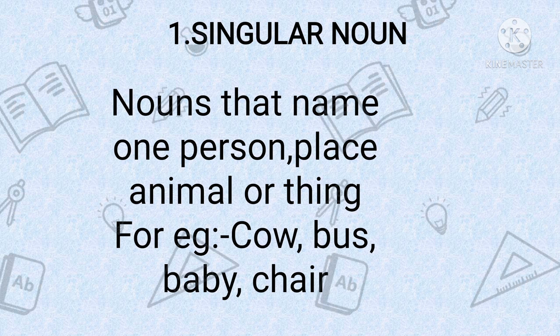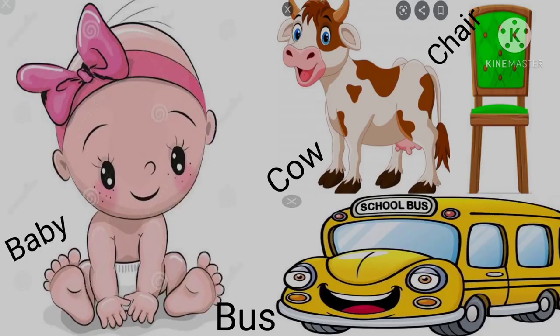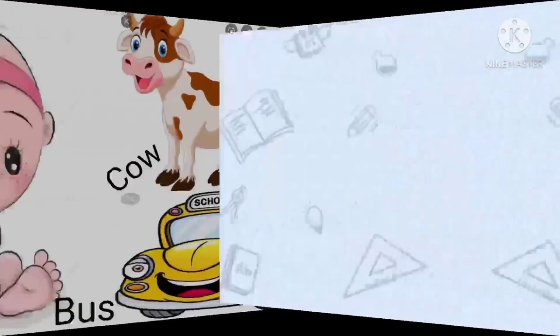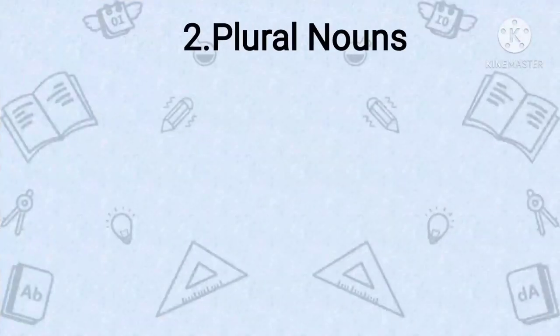First is singular nouns — nouns that name one person, place, animal, or thing. For example: cow, bus, baby, chair. As you can see in the picture: baby, cow, bus, chair.